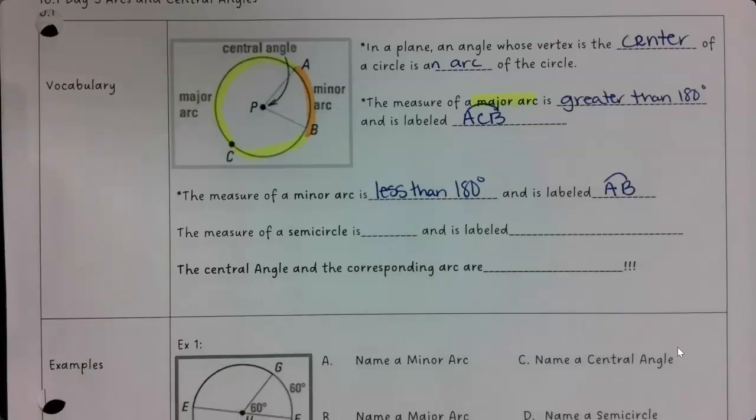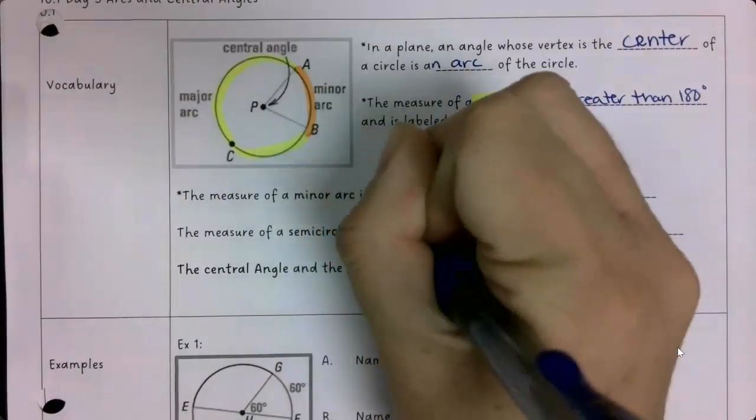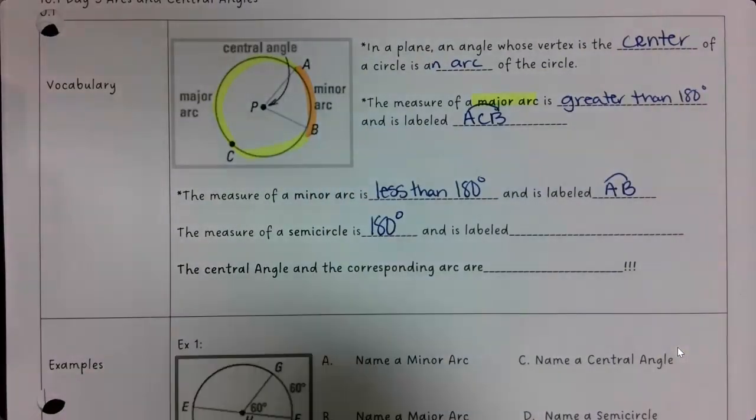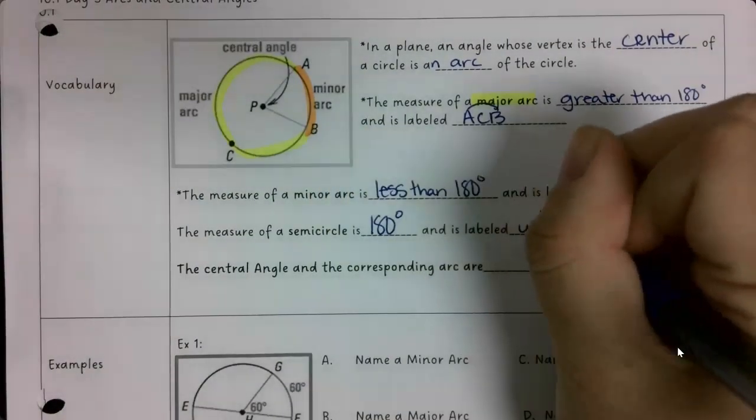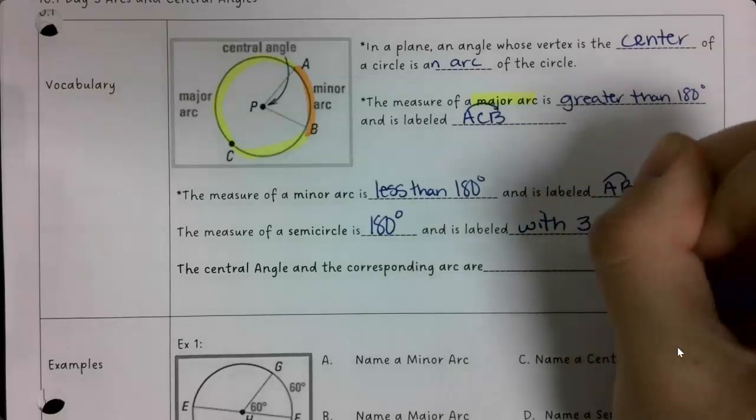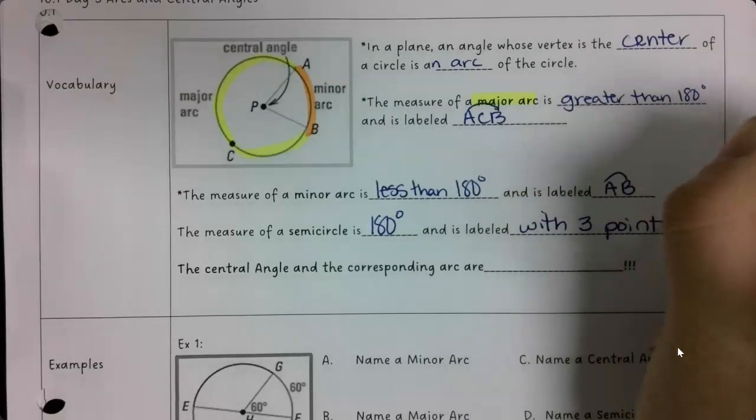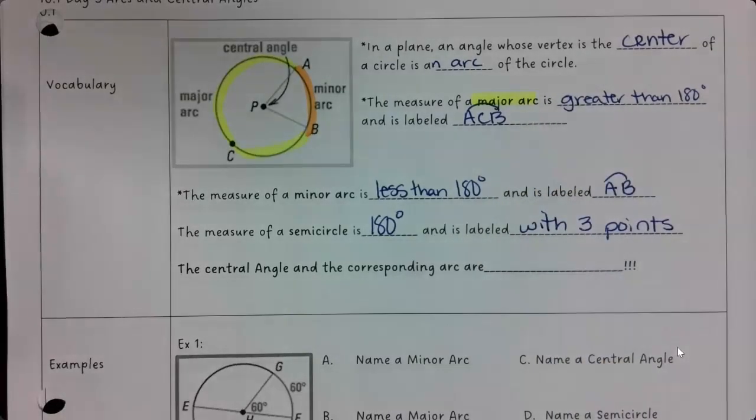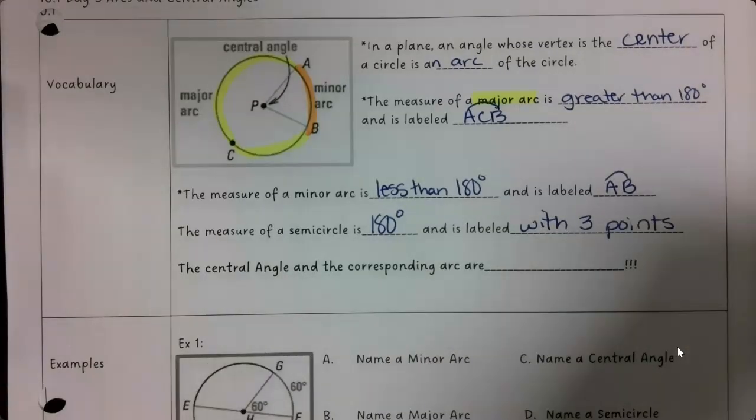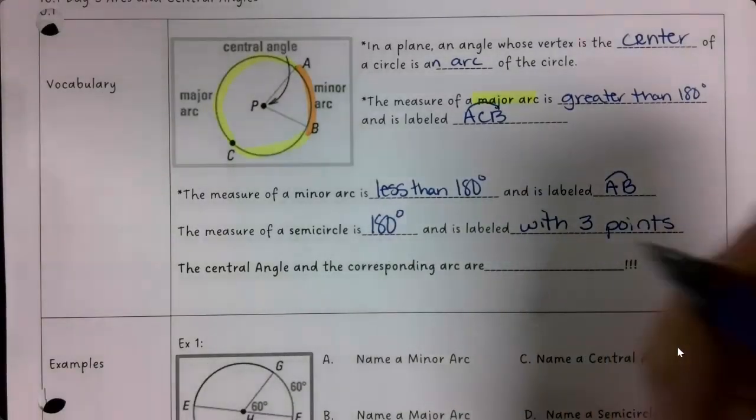The measure of a semicircle is 180 degrees. And it's labeled with three points. So the central angle and the corresponding arc are the same.